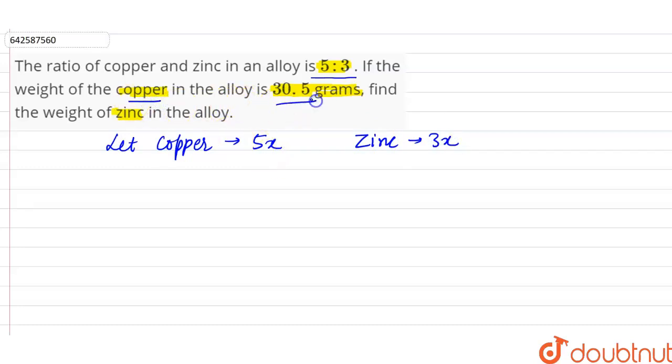Right, so we can say that the copper weight is 5x. So 5x is equal to 30.5. So the x will be equal to 30.5 divided by 5.